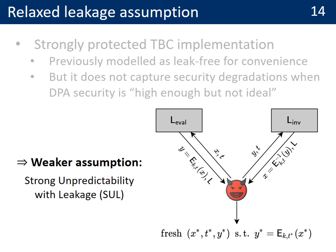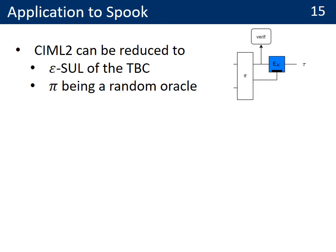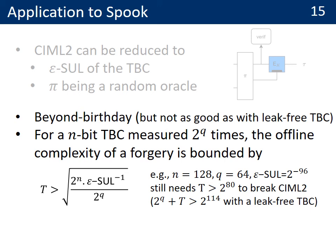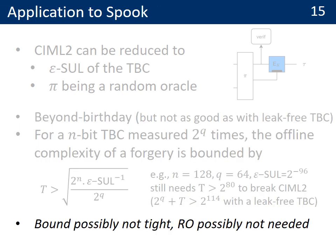Intuitively, strong unpredictability with leakage requires that an adversary who can send evaluation and inversion queries to a leaking oracle is not able to produce a fresh and valid plaintext-ciphertext pair. Applied to Spook, we can show that CIML2 can be reduced to the strong unpredictability with leakage of the tweakable block cipher and the permutation-based hash function being a random oracle. Bounds are still of beyond-birthday type, yet they are worse than with the leak-free TBC. For example, given a 128-bit tweakable block cipher, 2^64 leaking queries, and an epsilon of 2^{-96} for the strong unpredictability with leakage, one still needs 2^80 time to break CIML2. With the leak-free assumption, this bound would be 2^{114} even with a larger number of queries. We note that this bound is possibly not tight, and the random oracle is possibly not needed — both are interesting open questions.